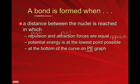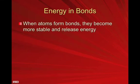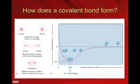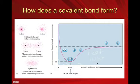Nature favors stability and low energy states. When an atom forms a bond, it becomes more stable. That energy difference — the bond energy — has to go somewhere; it can't just be destroyed. It gets released into the environment as heat, or maybe light, sometimes sound, or possibly a combination of all three. The stronger the bond, the more energy that's released, and the more heat, light, and sound you get from that release.